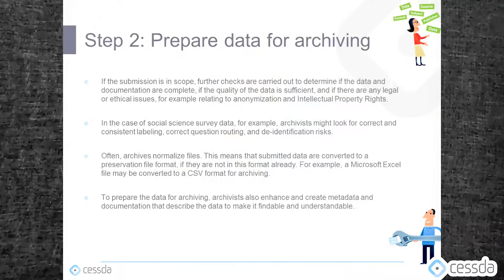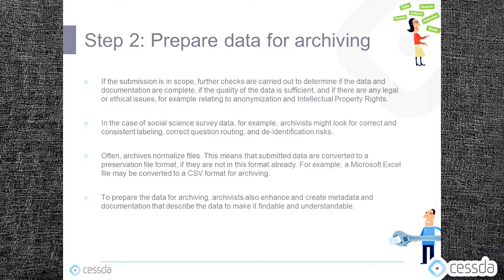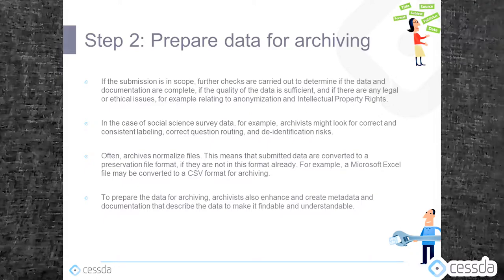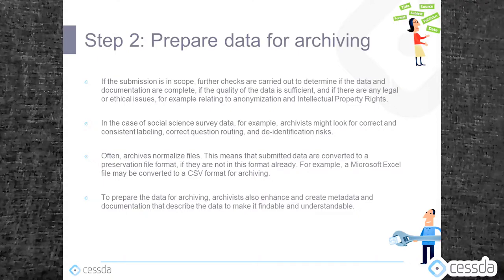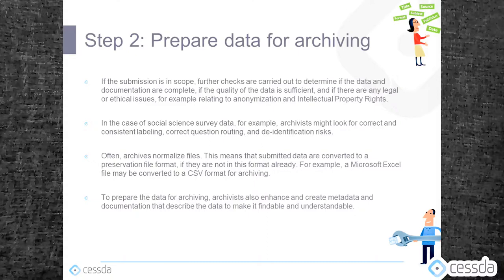The second step: prepare the data for archiving. If the submission is in scope, further checks are carried out to determine if the data and documentation are complete, if the quality of the data is sufficient, and if there are any legal or ethical issues, for example relating to anonymization and intellectual property rights. In the case of social science survey data, for example, archivists might look for correct and consistent labeling, correct question routing and de-identification risks.